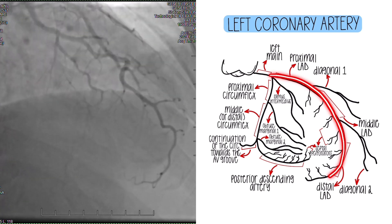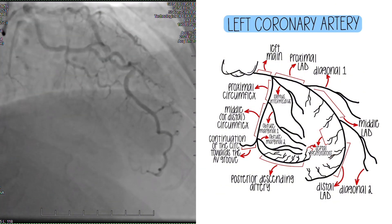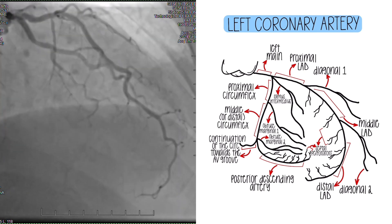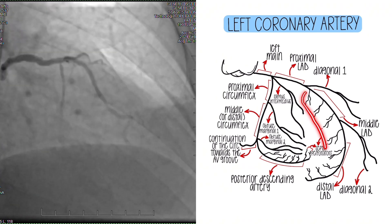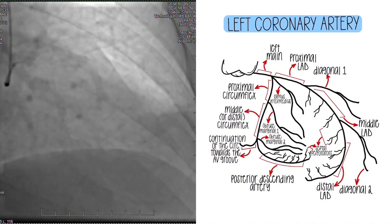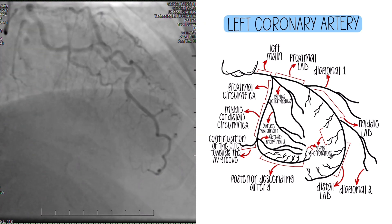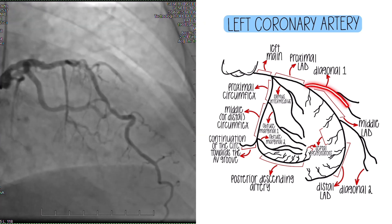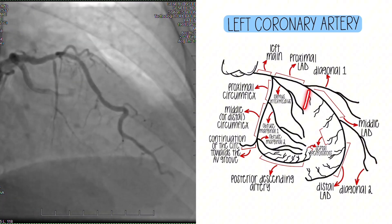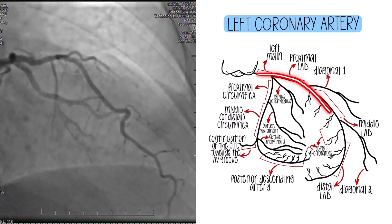Off of the LAD you have two options: diagonals or septal perforators. Diagonals — there's usually between one to four; some patients just have one, some have four, three, or two. You should have way more septals than diagonals in a normal healthy patient. Diagonals are bigger but there are fewer of them, and then septals are smaller and there are more of them. Here is diagonal one and diagonal two, and then we have a bunch of little septals — we don't really name them because there's a lot more than what's drawn here. The LAD is very long.